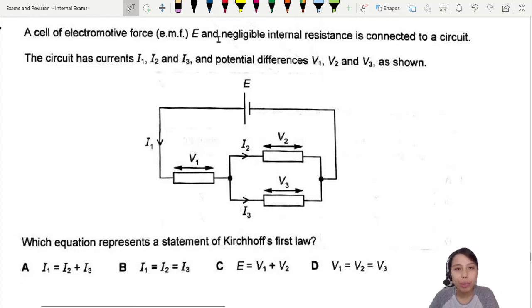Here's a cell of electromagnetic force E and negligible internal resistance connected to a circuit. The circuit has currents I1, I2, and I3, and potential differences V1, V2, and V3. Which equation represents a statement of Kirchhoff's first law? First law you need to know is